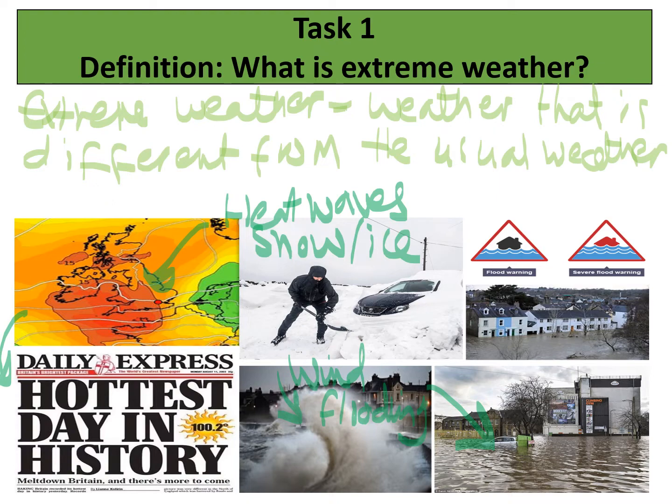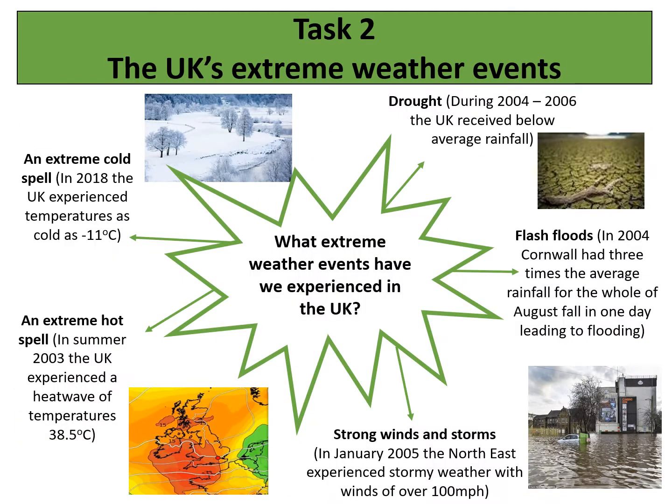Task two gives examples of the UK's extreme weather events. You have lots of different information — we've got things about drought, which is when there's very, very little rainfall. We have flash floods, when lots of rain falls very, very quickly. We have strong winds and storms, which might be like gale force winds.